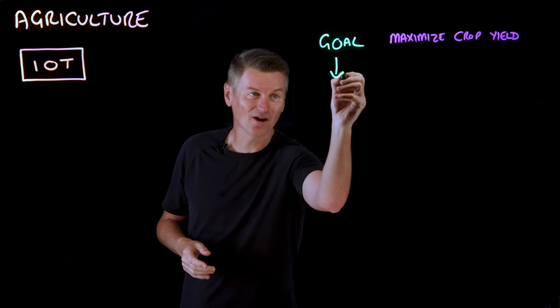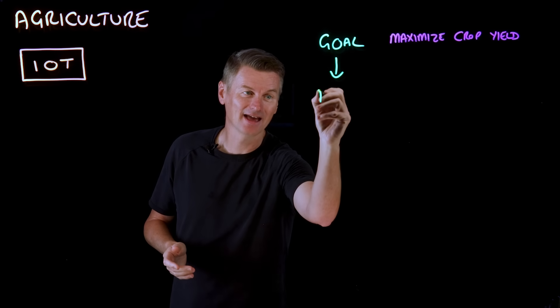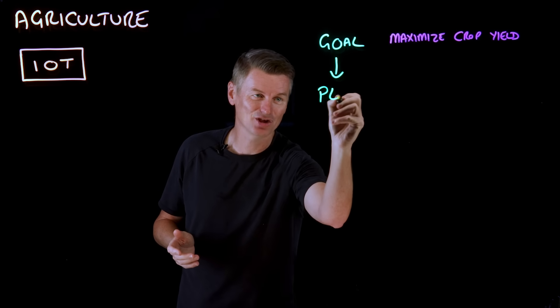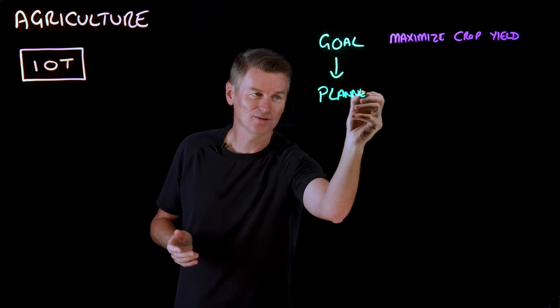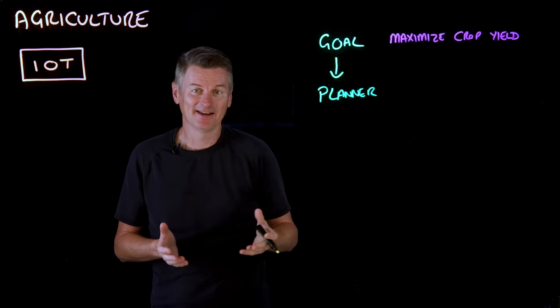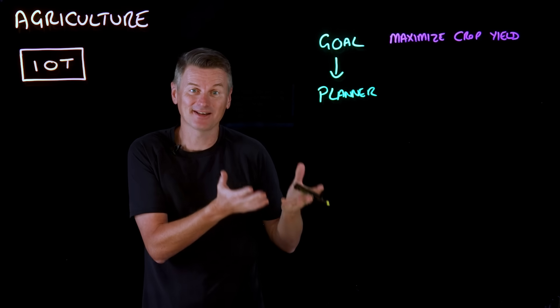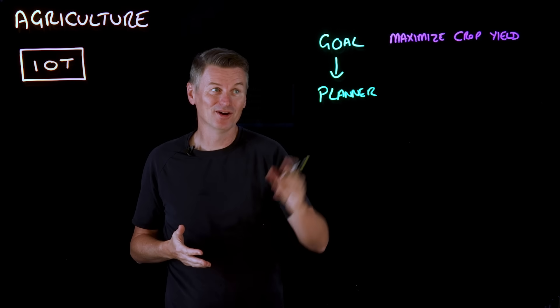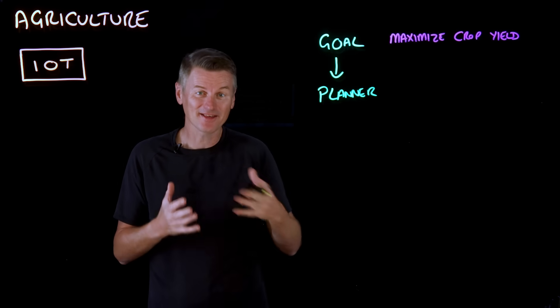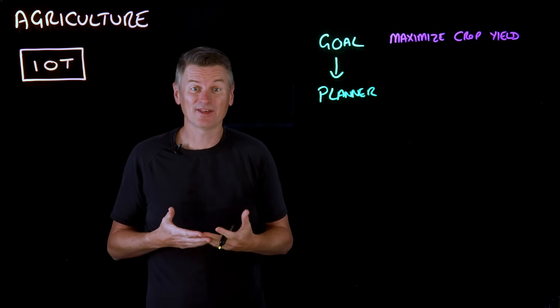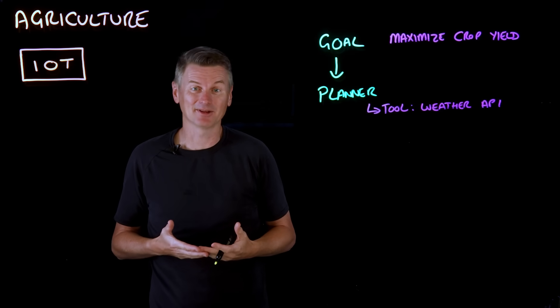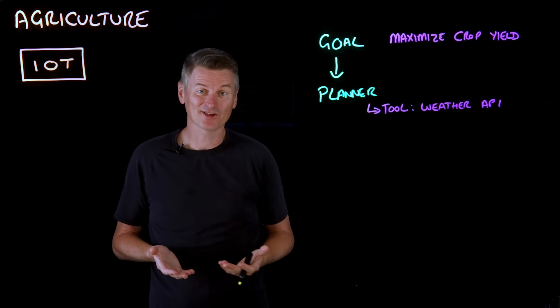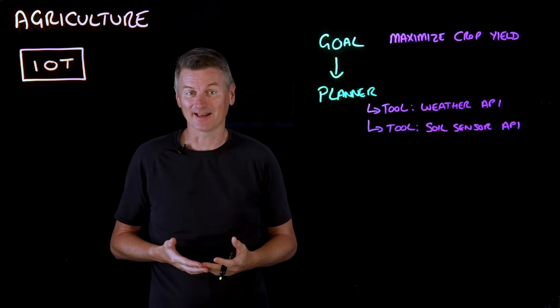Once we have a goal, we can start planning as to how we're actually going to achieve that by using a planner. Now in this case, this uses an LLM with access to external tools to plan a workflow to achieve the goal. In this instance, the agent's tools use APIs to fetch the latest available data sources like the current weather conditions and current soil readings.